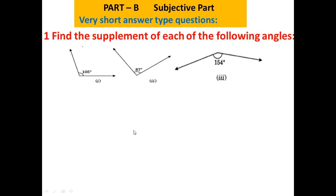Today let's start with Part B of the same assignment. Here we have some subjective questions. Question number one: find the supplement of each of the following angles. We all know very well that supplementary angles have the sum 180 degrees.